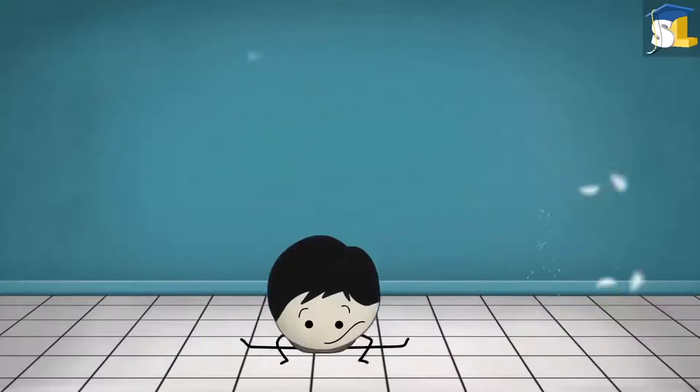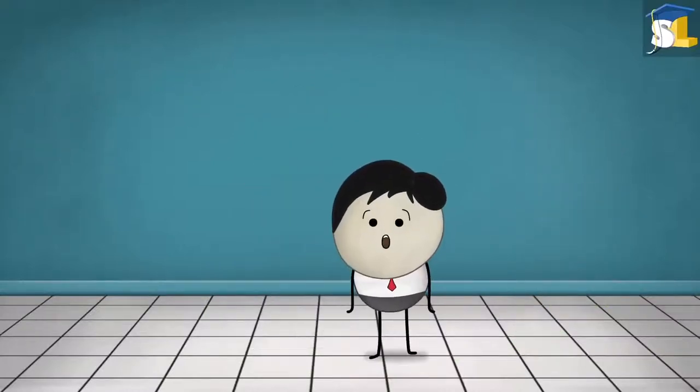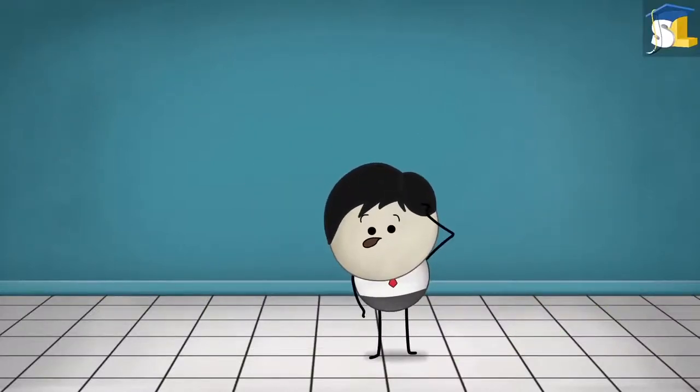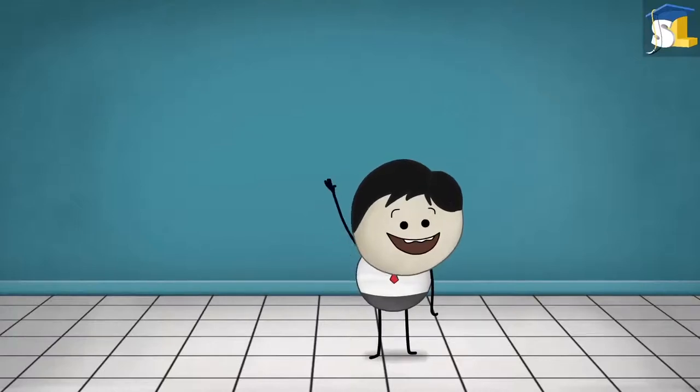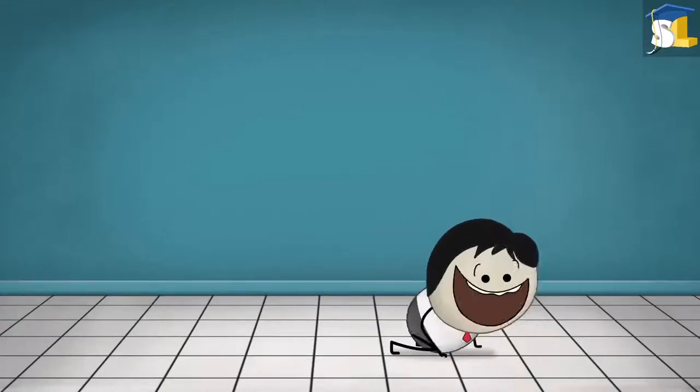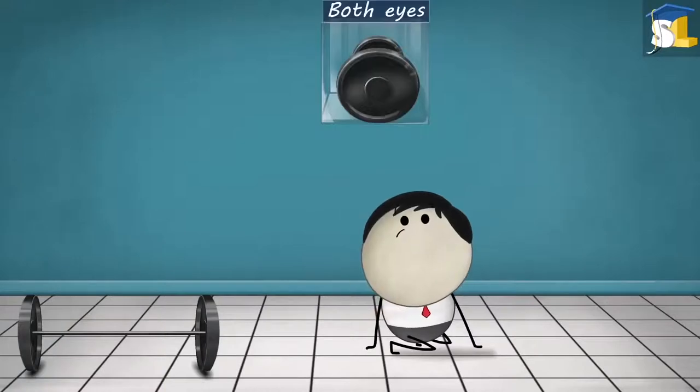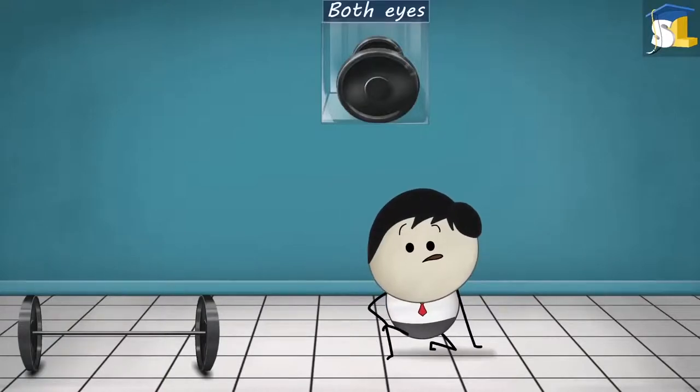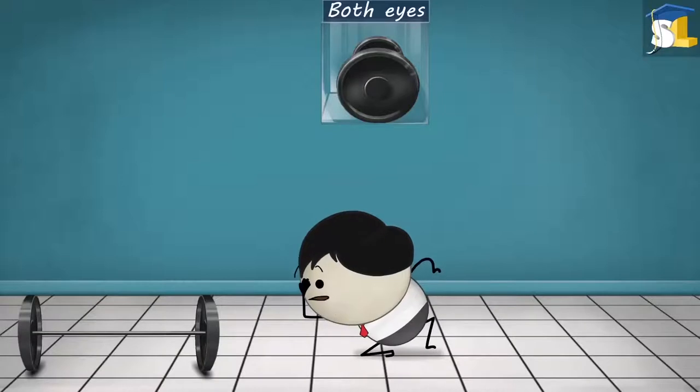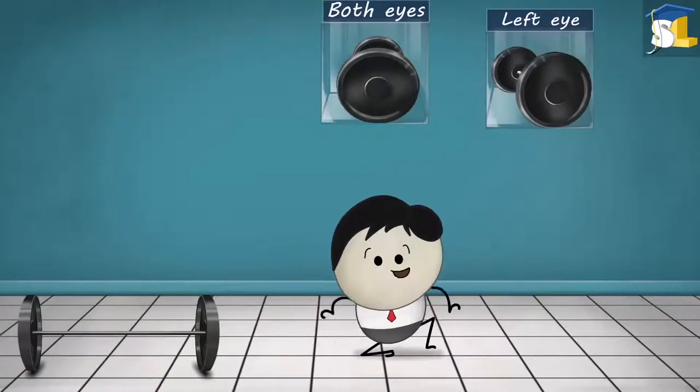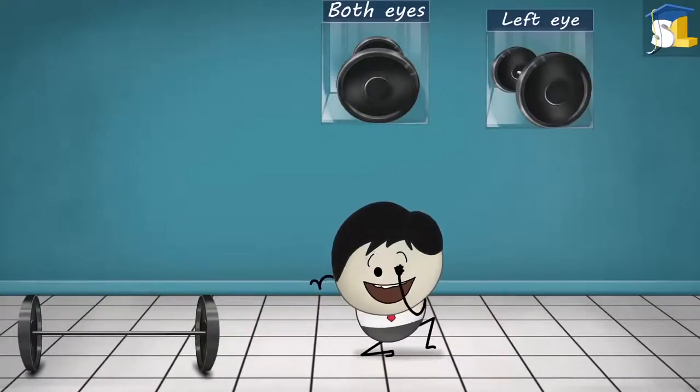Hey, did you know that our eyes see the same object from a slightly different angle? You don't believe me? Alright. Look at this object. Both your eyes see the object like this. Now, when you see only with your left eye, the object will look like this. While, when you see only with your right eye, the object will look like this.